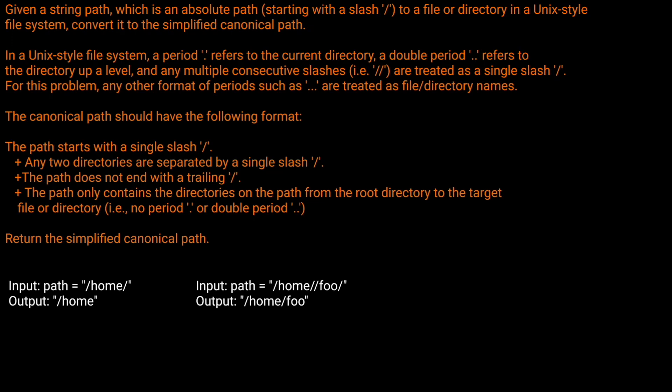In a Unix-style file system, a period refers to the current directory, a double period refers to the directory up a level, and any multiple consecutive slashes are treated as a single slash. Any other format of periods, such as three periods, are treated as file or directory names. The canonical path should start with a single slash, have directories separated by a single slash, not end with a trailing slash, and contain no period or double period. Return the simplified canonical path.